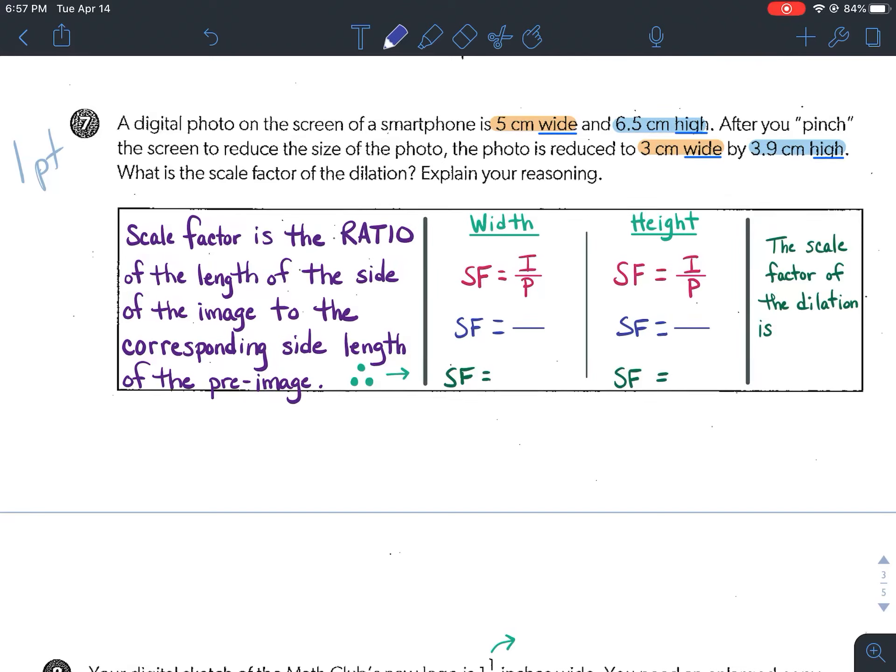Understanding Dilation's Worksheet 20, question number 7. A digital photo on the screen of a smartphone is 5 centimeters wide and 6.5 centimeters high. After you pinch the screen to reduce the size of the photo, the photo is reduced to 3 centimeters wide by 3.9 centimeters high. What is the scale factor of the dilation? Explain your reasoning.